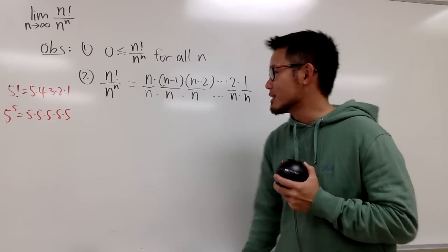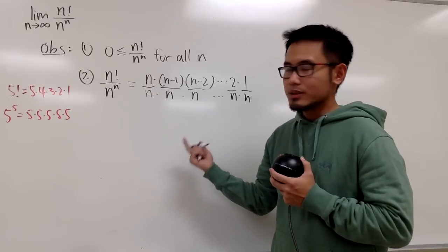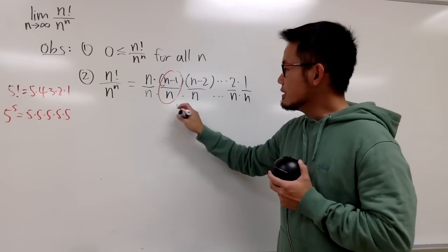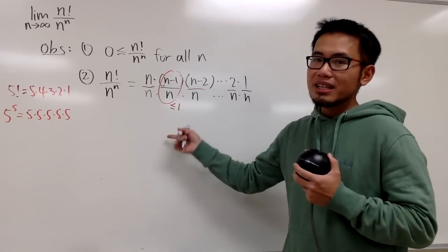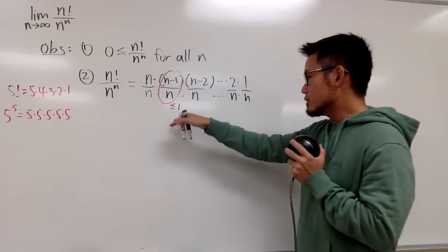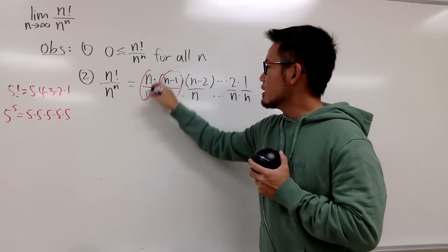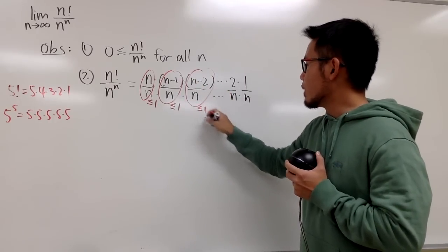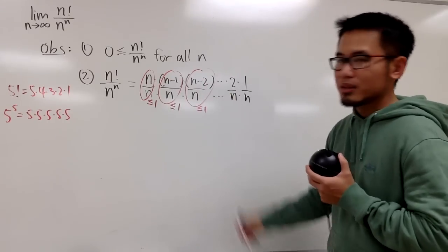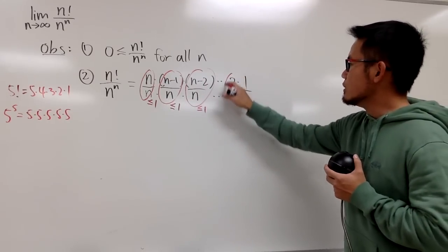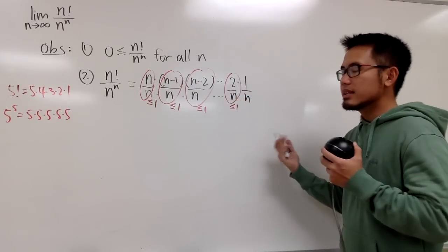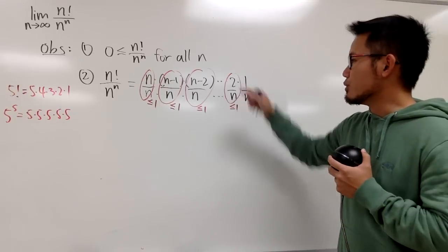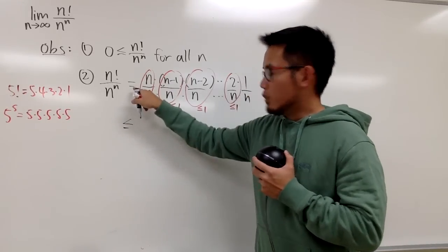Now here is the inequality part. We know n/n = 1. The next pair is (n−1)/n, which is always less than or equal to 1. Similarly (n−2)/n ≤ 1, and so on down the line. The last pair before the final factor is 2/n, which is also less than or equal to 1, since we are considering n going to infinity so n is much bigger than 2.